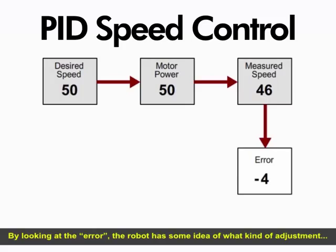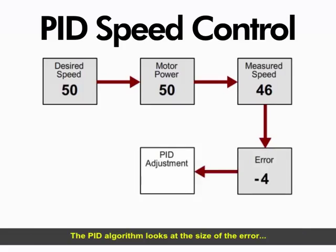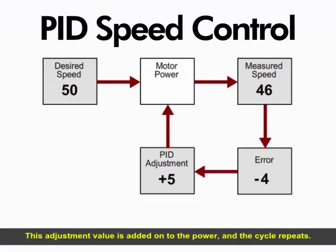By looking at the error, the robot has some idea of what kind of adjustment it needs to make to the power in order to get the speeds to match. The PID algorithm looks at the size of the error, as well as how the error is changing over time, and calculates an adjustment to make to the base motor power. This adjustment value is added onto the power, and the cycle repeats.